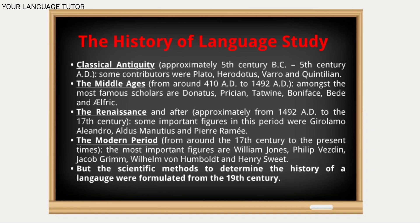After the 17th century, we have the modern period, which continues to the present day. In this period we have William Jones, we have Philip Weston. William Jones is the one who linked Sanskrit with Latin and Greek languages and proposed that there must be a proto-Indo-European language. Henry also comes in the Swedish context, and there are many more in this period.